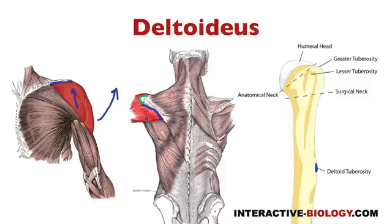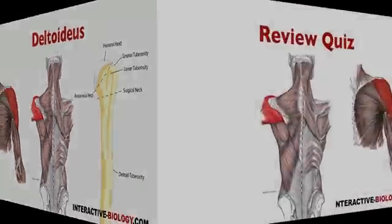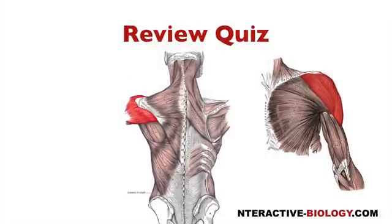So we can have flexion, abduction, and extension, depending on what portion of the deltoideus muscle is contracting. For a quick review, you can turn the volume down and quiz yourself.